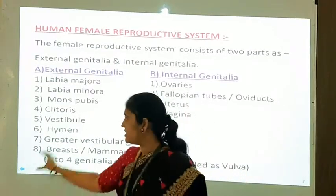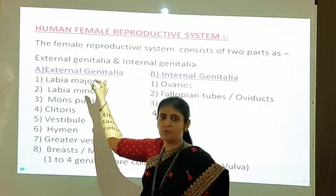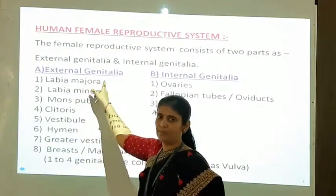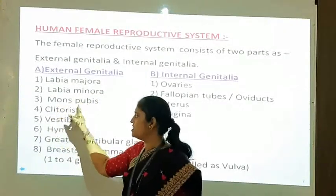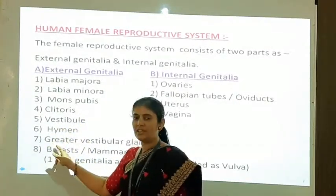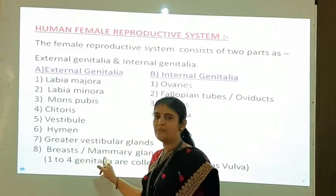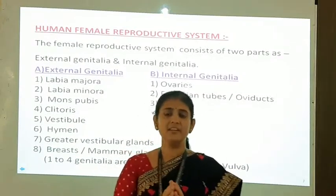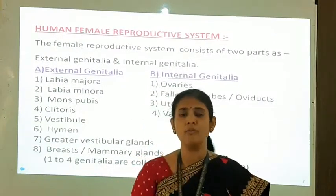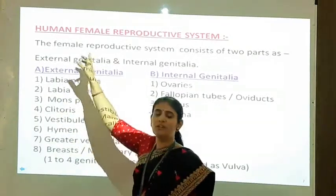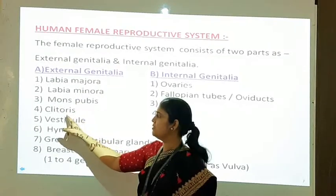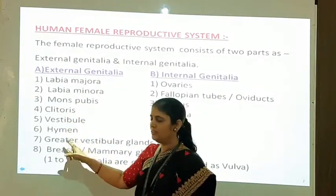The external genitalia are parts present on the external surface of the body. The female reproductive system consists of eight parts in external genitalia: first labia majora, second labia minora, third mons pubis, fourth clitoris, fifth vestibule, sixth hymen, seventh greater vestibular glands, and eighth breast or mammary glands.